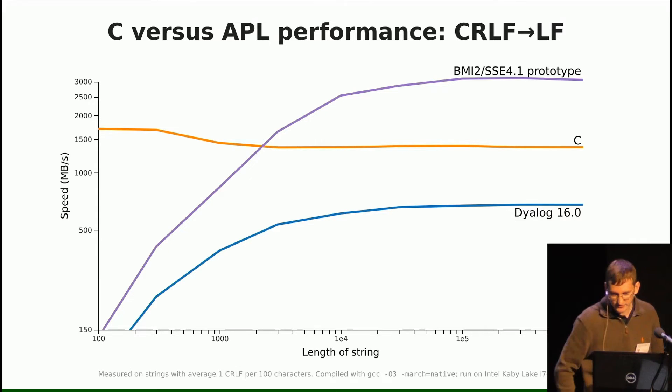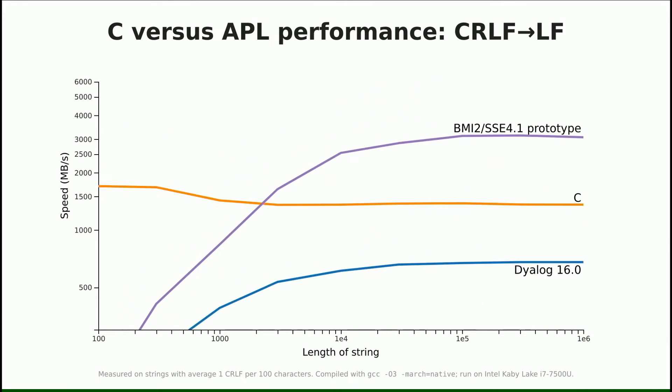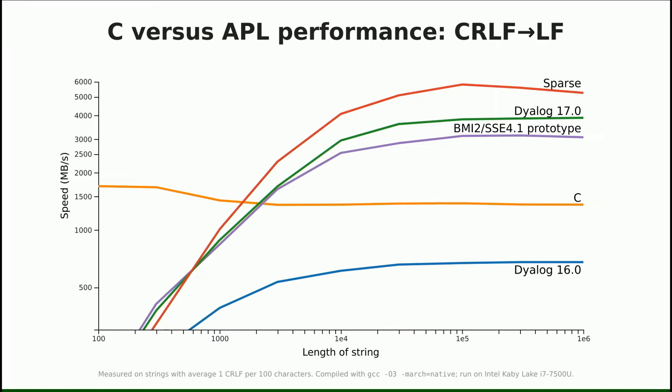I would like to make a small correction to that. Here is where version 17 actually ended up. I found a better implementation that also uses less advanced vector instructions — BMI2 is only out since 2013, so this will work on all your old 2008 machines. And when there are very few line endings in the file, it actually gets considerably faster still.